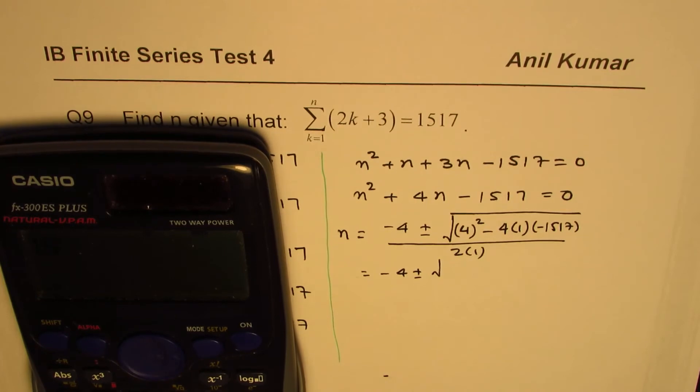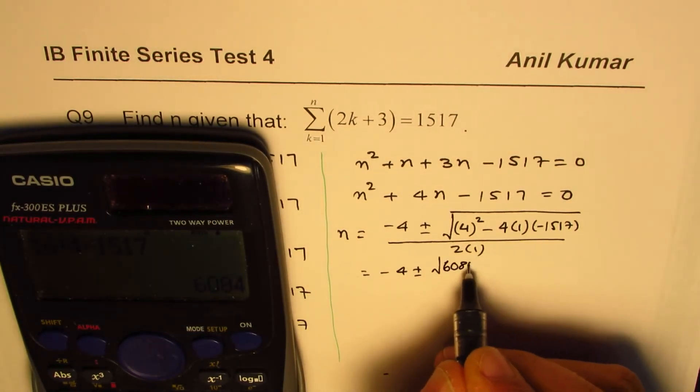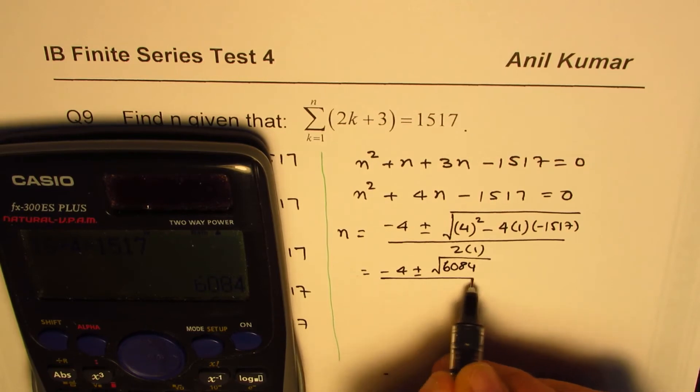4 squared is 16 plus 4 times 1, 5, 1, 7. 1517 equals to 6084 divided by 2.